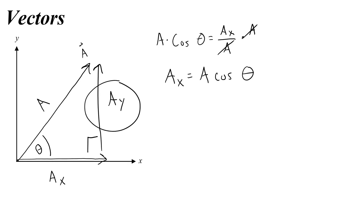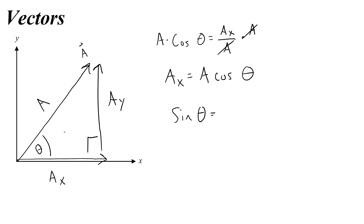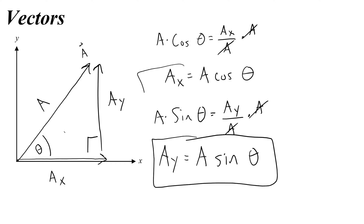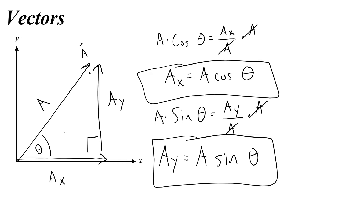For the vertical component ay, it is opposite of theta, not adjacent to it. So we can use sine and say that sine theta is equal to opposite over hypotenuse, or ay over a. Then we multiply both sides by a to get rid of a on the right side, and now I have an equation for the y component: ay equals a times sine theta. So these are our equations for the x and y components of any vector. Let's do a few example problems to see how this works.